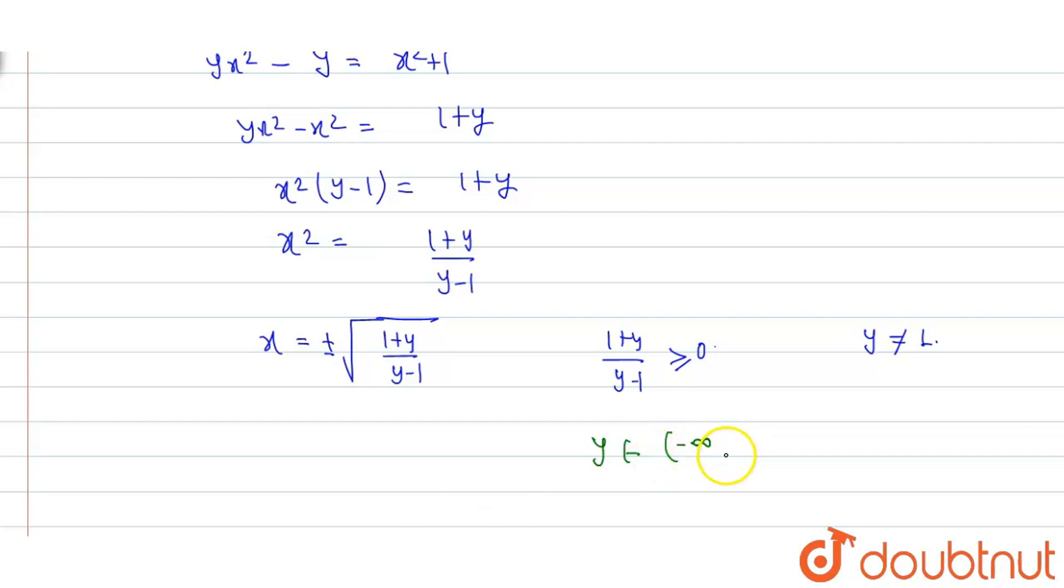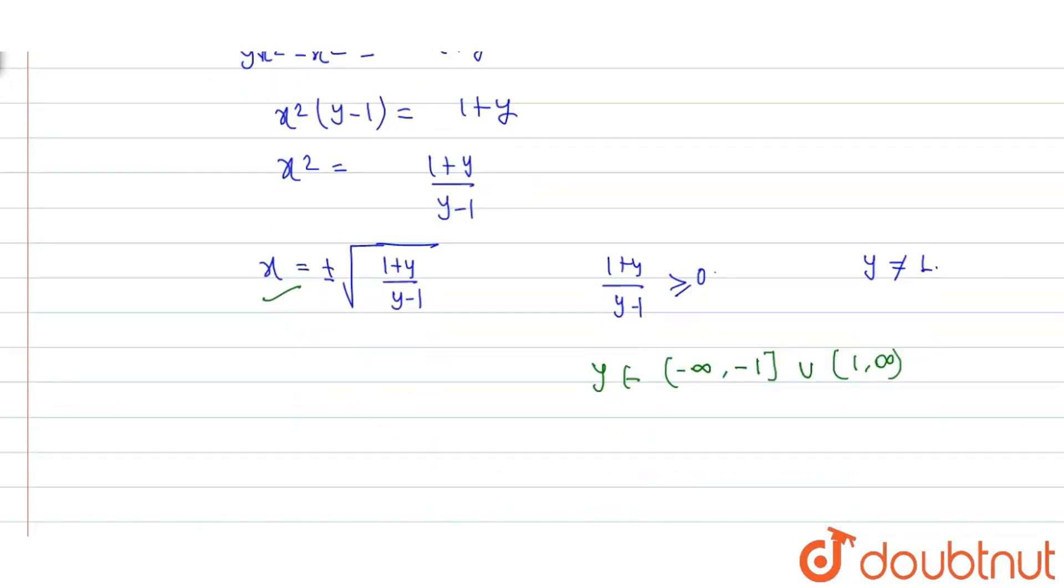Y belongs to minus infinity to minus 1 union 1 to infinity. So for these y values, x will have real values. So the range of f is equal to minus infinity to minus 1 union 1 to infinity. OK, thank you, enjoy learning.